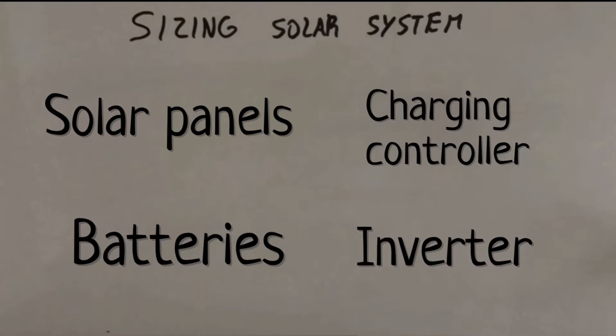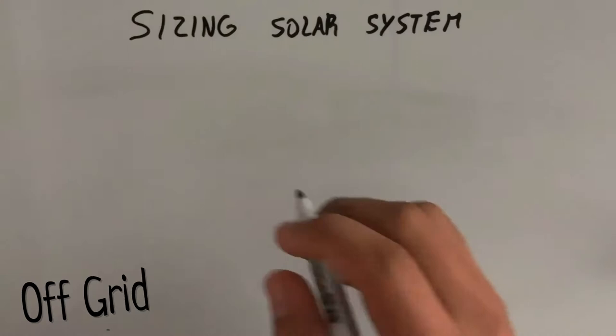The three major benefits that I see in off-grid system is the power outage, you will avoid that, the electricity bill will be lower, and it's actually easier than grid type systems. So let's begin.